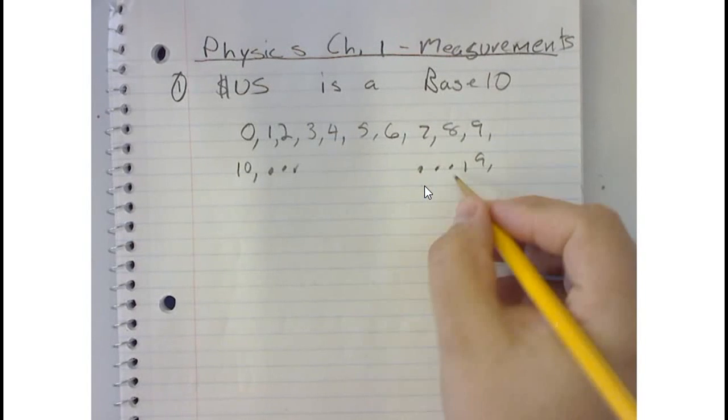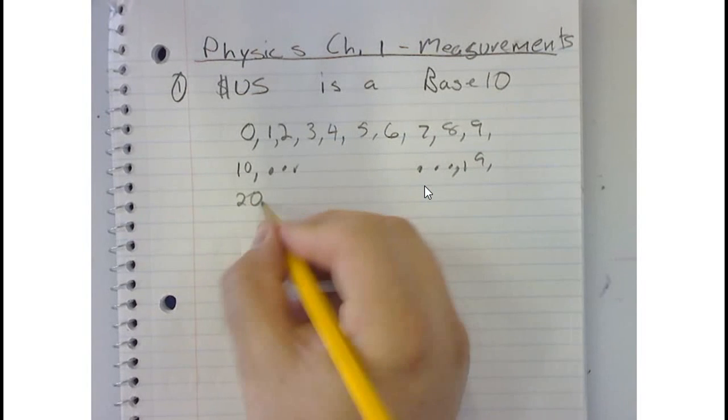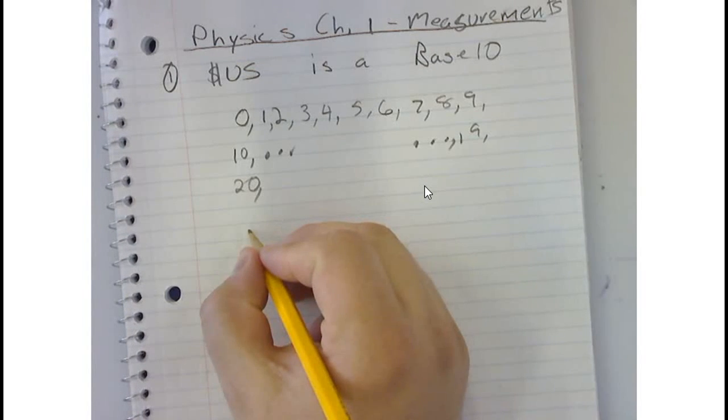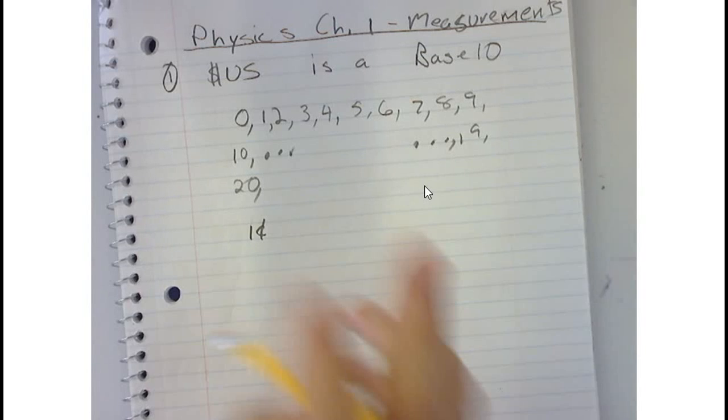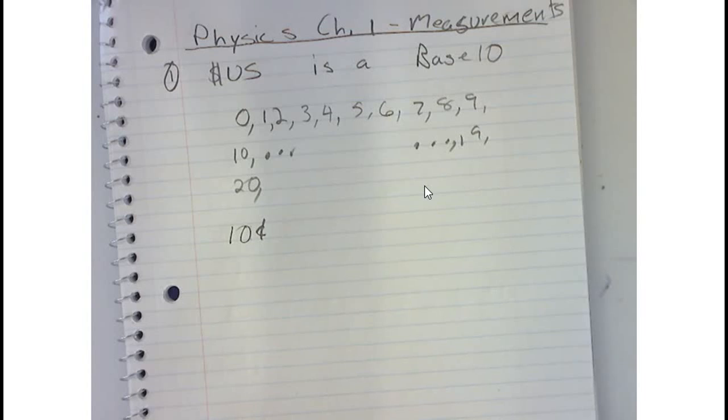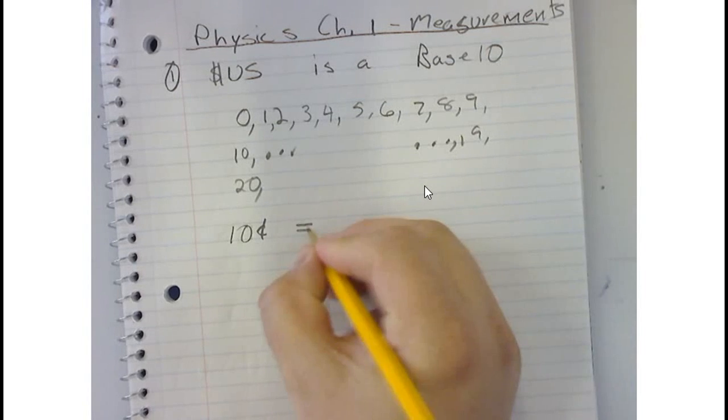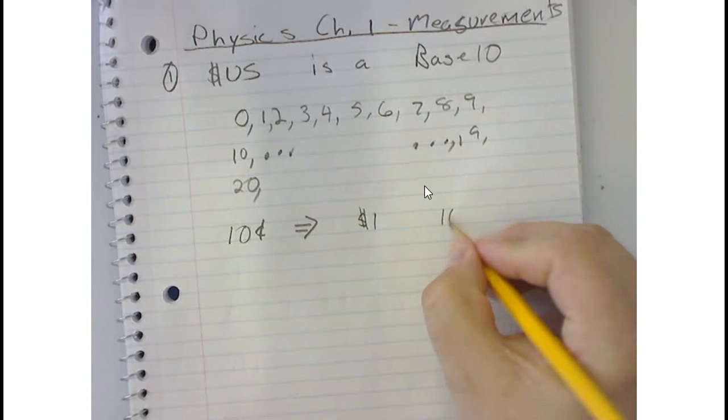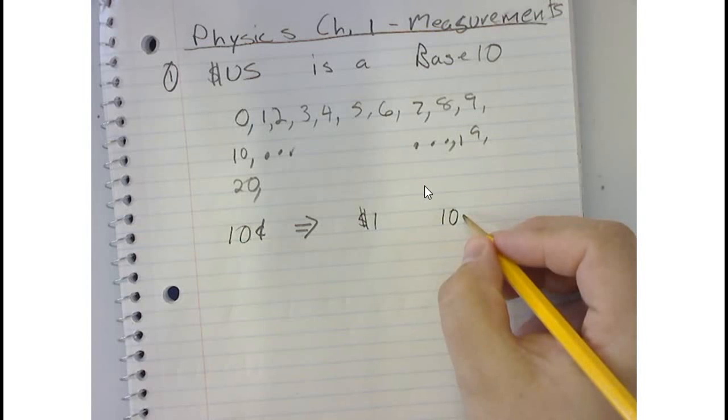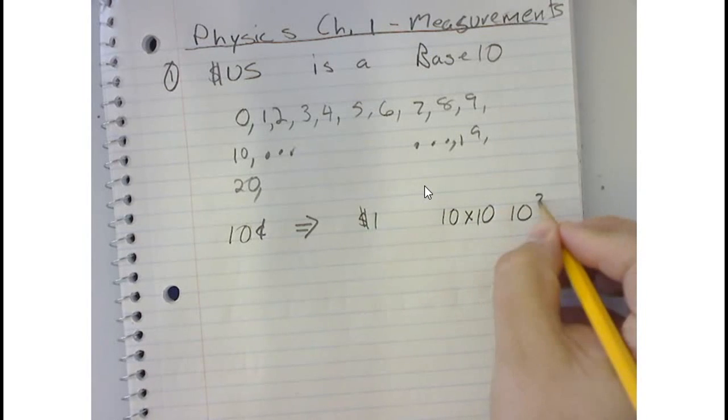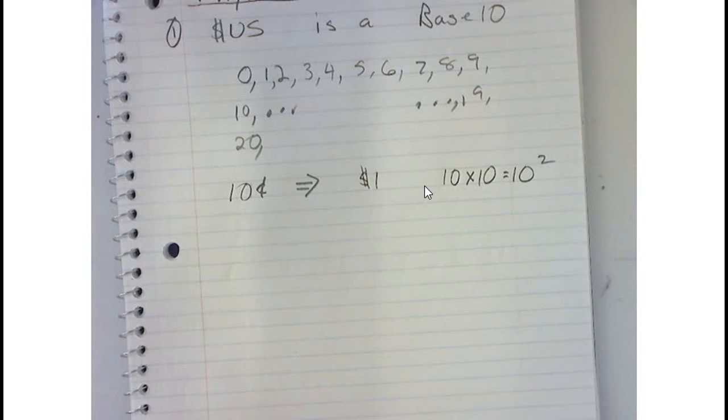So if I had a dime, which is 10 cents, right? If I were to get one dollar, I would have 10 dimes times 10, so it'd be 10 cents times 10, or 10 squared.